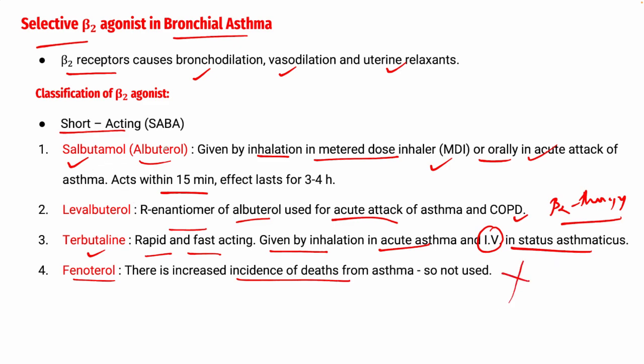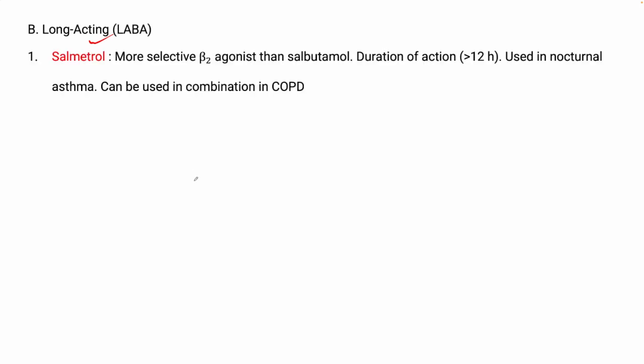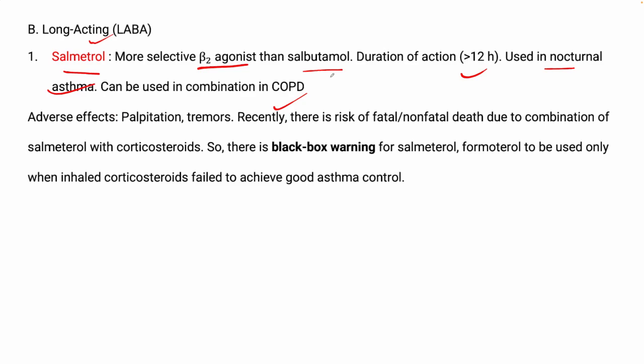The next classification is LABA — Long-Acting Beta-Adrenergic drugs. Salmeterol is more selective for beta-2 receptors than salbutamol, with a duration of action of 12 hours. It is used in nocturnal asthma — asthma that exacerbates at night — and in combination therapy for COPD. Adverse effects include palpitation and tremors (shaking of hands).